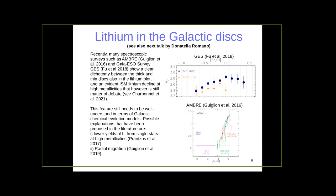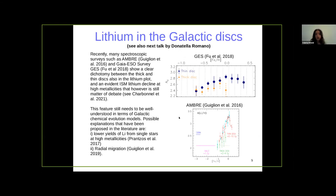A question from Sanjeev Sharma in the chat about the parallel model: can you form the thin and thick disk at the same time and the same location, or at the same time but in different locations? The predictions I showed are at the same location, in the solar vicinity. We also extended the parallel models to various galactocentric distances in another paper from 2018, but here I mainly focus on the dichotomy in the solar vicinity.